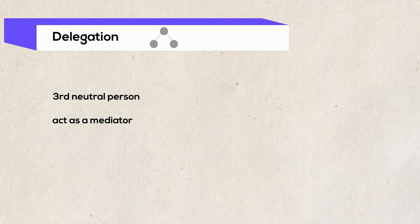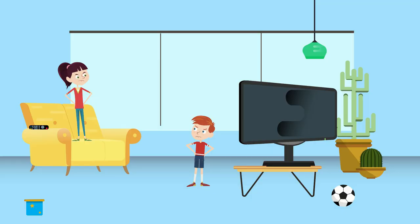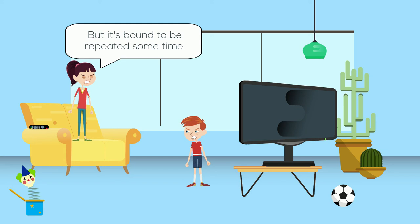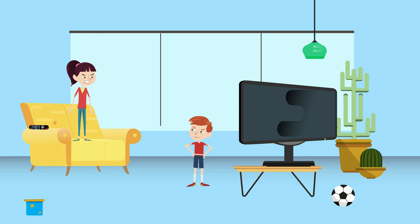Delegation means that a third neutral person is involved in the conflict who can act as a mediator between the parties and help them find an amicable settlement. The third party ensures that communication between the counterparties is maintained. However, delegation is only applicable under two conditions: firstly, there must be a wrong and a right solution to the dispute; and second, the third party as a higher authority has to support finding the right solution. Let's look at an example. 'But I really want to watch this program. I have to know what happens next.' 'But this film is only playing today and I've been waiting to see it for a month.' 'But it's bound to be repeated sometime.' 'You already decided yesterday.' 'You are unfair.' 'Mom should decide.'